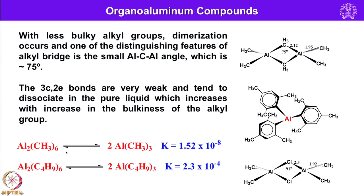The dissociation constant for Al2Cl6 when it dissociates into two monomeric species is k = 1.52 × 10⁻⁸, whereas when you have C4H9, k is 2.3 × 10⁻⁴.